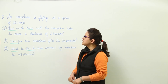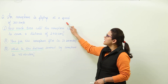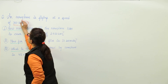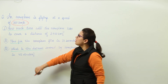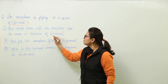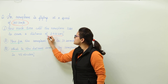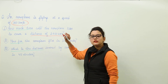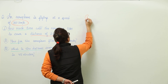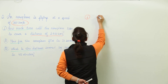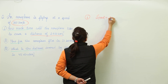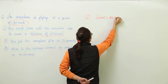The question says an aeroplane is flying at a speed of 360 kilometers per hour. This is the speed given to us. Now let us write the data that has been given to us. For the first part, the speed is 360 kilometers per hour.